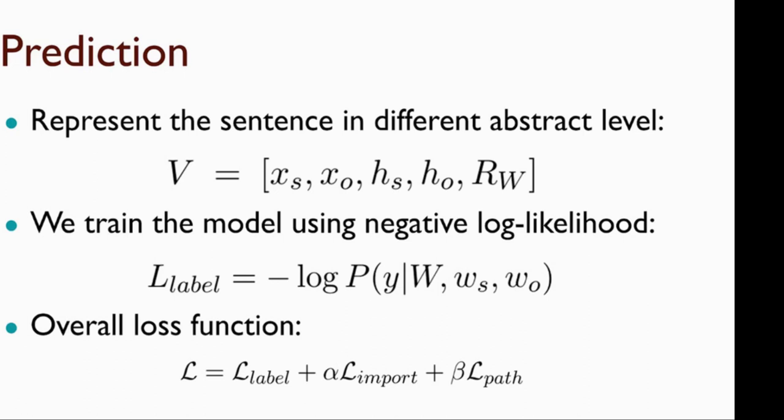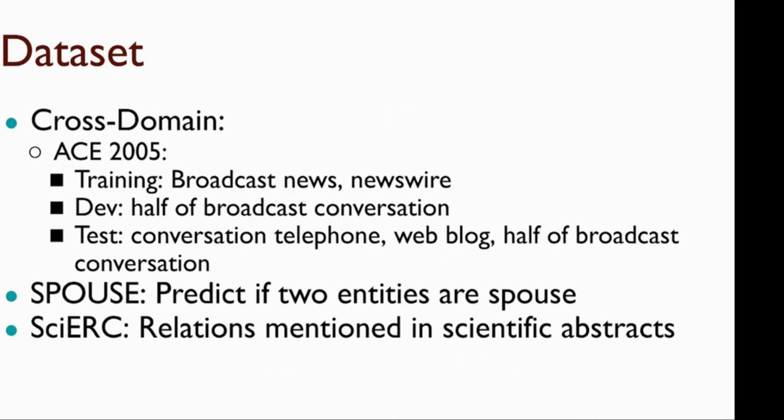In our experiments, we are using three datasets. The first one is for cross-domain setting, which is ACE2005 dataset. We are using Broadcast News and Newswire as the training, and also half of the Broadcast Conversation for the development, and the rest of the data are used for testing. In addition, TACRED dataset is a dataset for predicting if two entities are exposed or not, and SciERC is another dataset to predict the semantic relations mentioned in scientific abstracts.